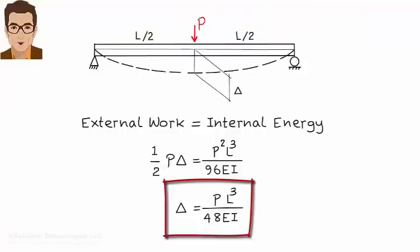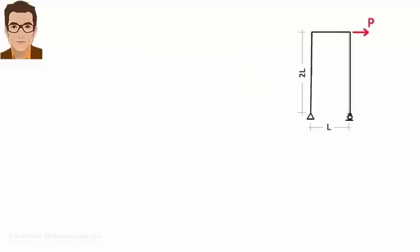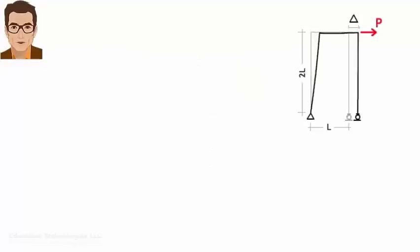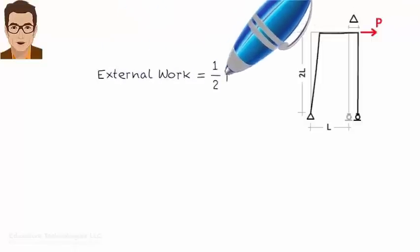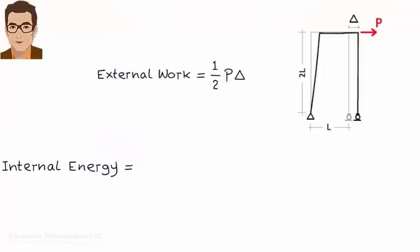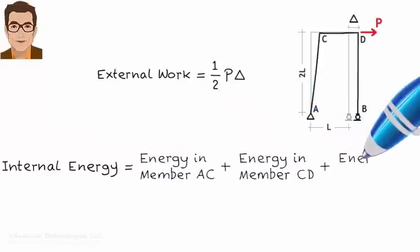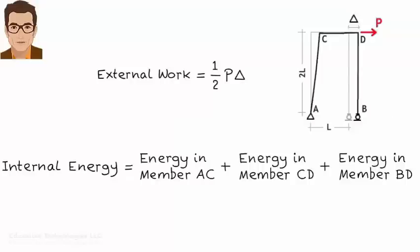Let's wrap up our discussion on the work energy principle by examining its use for determining the deflection of a frame subjected to a concentrated load. The expression for external work is rather easy to obtain — it is ½P times delta. The frame consists of three members, so we need to calculate the internal energy stored in each member. To do so, we first need to analyze the structure and calculate its internal member forces.